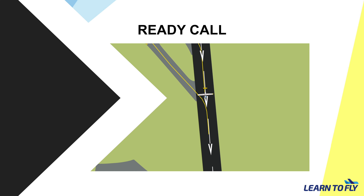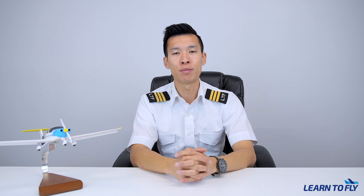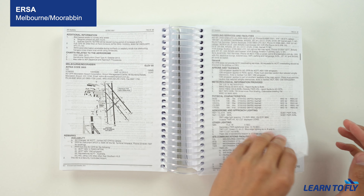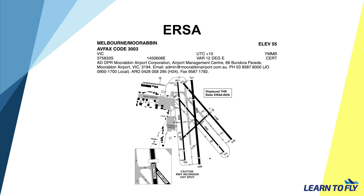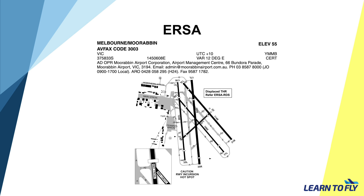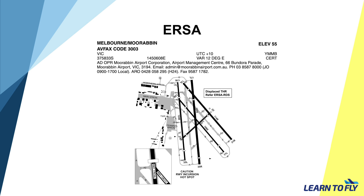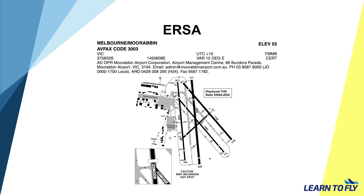Upon receiving our ready call, tower may have three different options to respond. Firstly, they could say 'X-Ray Papa Papa Papa, hold position' — readback is 'hold position, X-Ray Papa Papa Papa' — meaning we must be stationary until further instructions. Secondly, they could say 'X-Ray Papa Papa Papa, line up' — readback is 'line up, X-Ray Papa Papa Papa' — indicating clearance to enter and line up with the runway, but it is not a takeoff clearance. The only scenario where we are allowed to take off is when tower says 'X-Ray Papa Papa Papa, clear for takeoff' — readback is 'clear for takeoff, X-Ray Papa Papa Papa' — and now we can proceed with the takeoff.